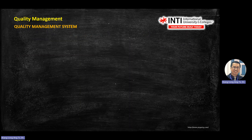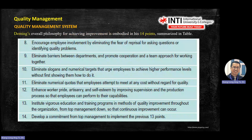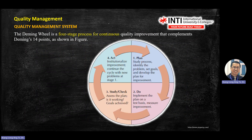Besides his 14-point philosophy, Deming is also famous for the PDCA cycle — a four-stage process for continuous quality improvement. When you manage a project, you need to monitor and control. Deming proposed these four main stages: Plan, Do, Check, and Act. This is known as PDCA. When you go to work and deal with quality, they will mention PDCA, which also expands to other names.